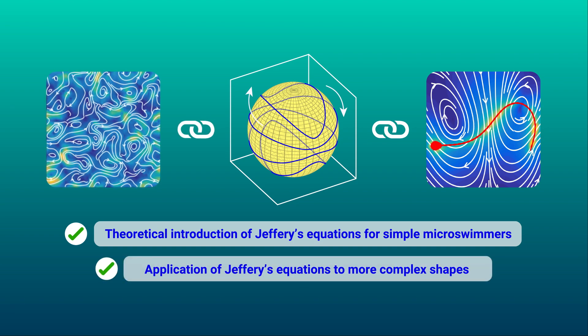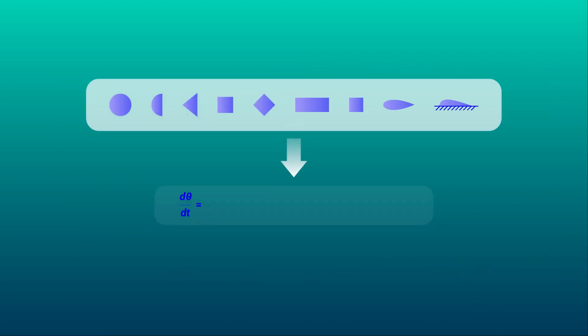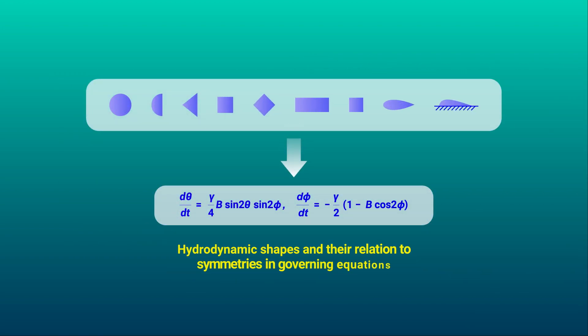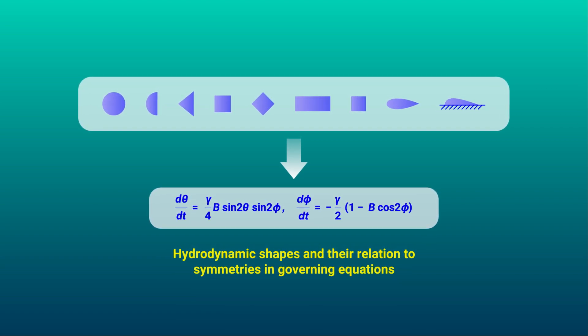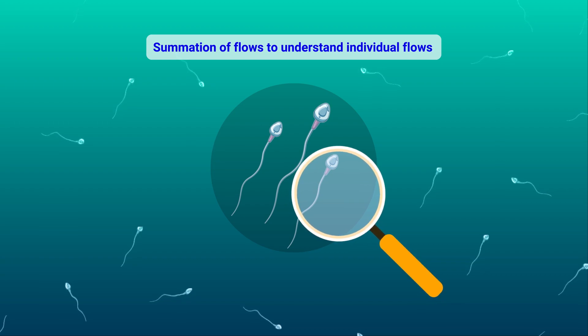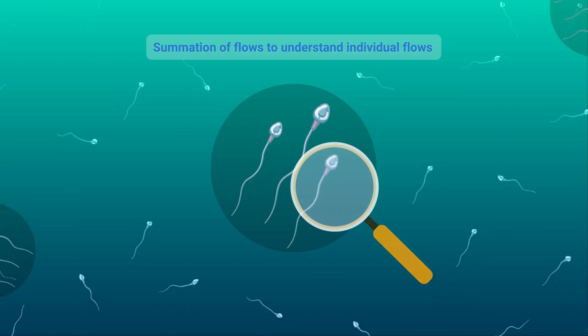The review then details the concept of hydrodynamic shapes and how it relates to symmetries in the governing equations. While summation of flow fields helps in determining the background flow for individual swimmers, scaling up these interactions can help us understand their collective behavior.